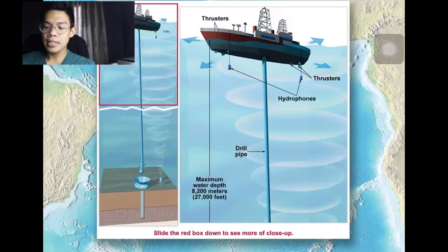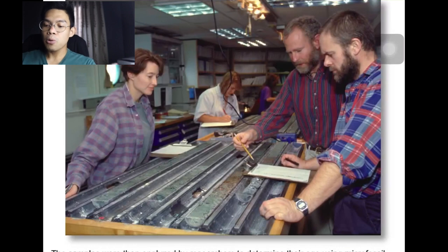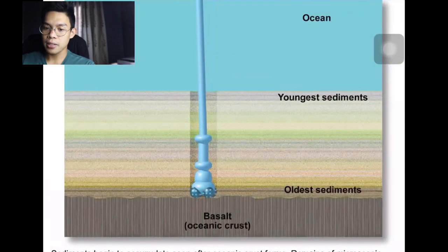Criss-crossing the mid-Atlantic ridge, hundreds of holes were drilled through layers of sediments and down into basaltic rocks of the oceanic crust. Core samples of ocean floor sediment and rocks were brought aboard the drilling vessel in hollow drill pipes. The samples were analyzed to determine their age using microfossil and radiometric dating techniques, providing conclusive evidence of seafloor spreading and plate tectonics.